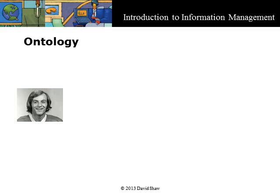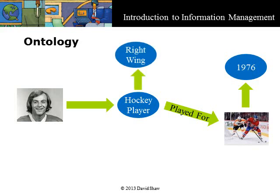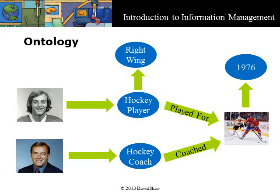Ontologies can be applied to information resources to form a rich basis for knowledge management. For example, our hockey ontology might manifest itself as follows: Guy Lafleur was a player. He played for the Montreal Canadiens in 1976, and he played the right wing position. Scotty Bowman coached the Montreal Canadiens in 1976. Software capable of leveraging ontologies for searching and browsing could then help us discover that Scotty Bowman coached Guy Lafleur, and then point us to information about each of them and about the Montreal Canadiens, not to mention other right wingers or about things that happened in 1976.